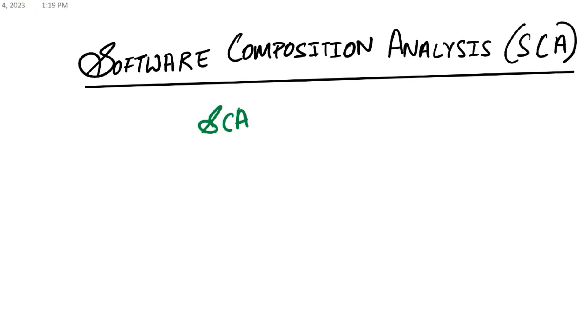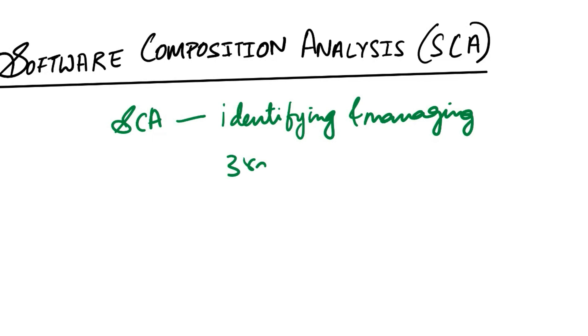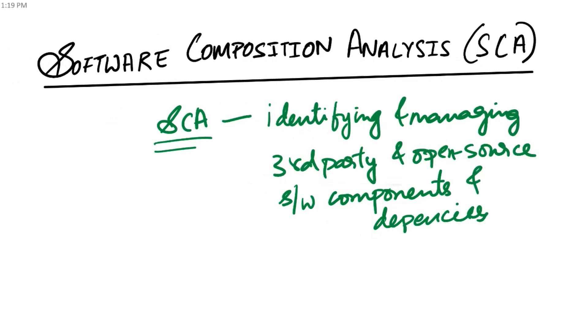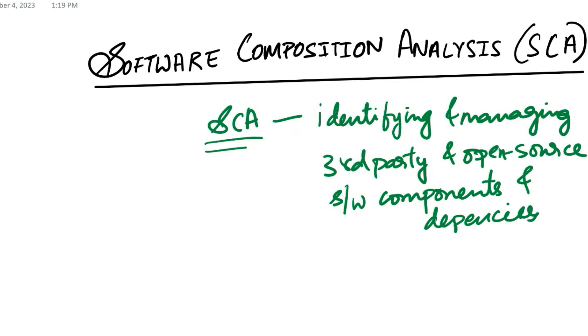SCA is a security practice in software development and application security. This focuses on identifying and managing third-party and open source software components and dependencies that are used in a software project. SCA is crucial for assessing the security and compliance of these dependencies and ensuring that they do not introduce vulnerabilities or any kind of risks into an application.